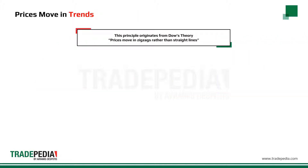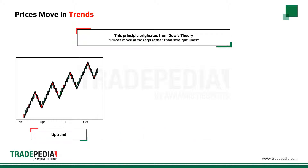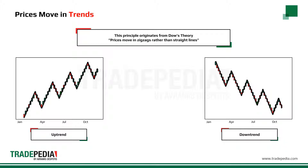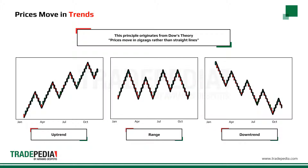The principle that prices move in trends originates from Charles Dow theory. He concluded that prices move in zigzags rather than straight lines, creating three directions: an uptrend, where the general price movement is up; a downtrend, where the general price movement is down; and a range, which is characterized by a sideways price movement.